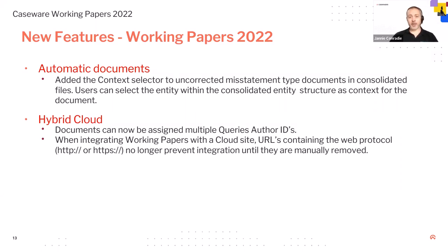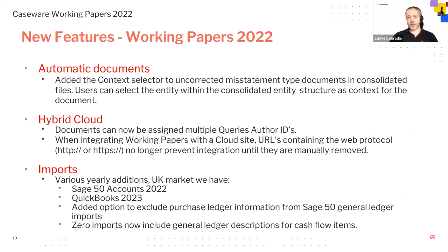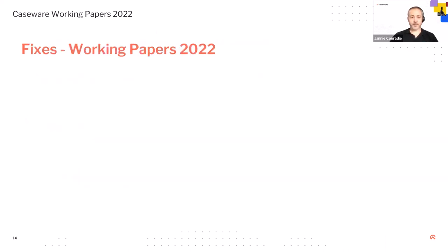On hybrid cloud, documents can now be assigned to multiple query author IDs. Also, when integrating Working Papers with a cloud site, URLs containing the web protocol HTTP or HTTPS no longer prevent integration until manually removed. For imports, we've updated various imports for the UK market: we now have Sage 50 2022, QuickBooks 23, and we've added the option to exclude purchase ledger information from Sage 50 general ledger imports. Also, Xero imports now include general ledger descriptions for cash flow items.